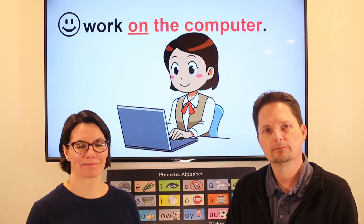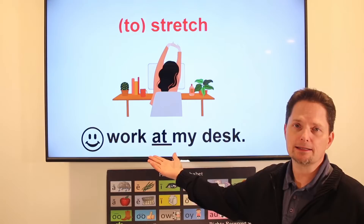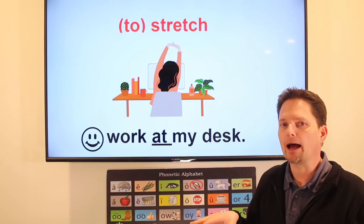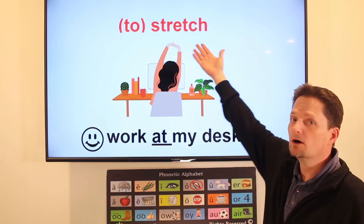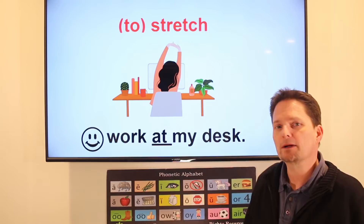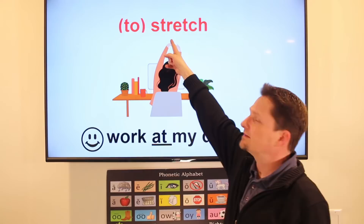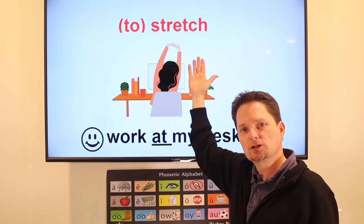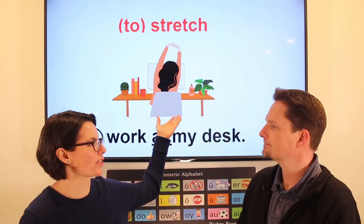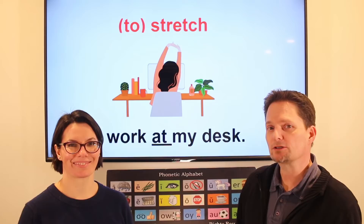I work on the computer and I work at my desk. Remember: desk, table, and counter — we say 'at.' Sit at the table, pay at the counter, I work at my desk all day — so I need to stretch. Pronunciation of 'stretch': TR makes a 'ch' sound like chicken — 's-ch,' 'str,' 'stretch.' Do you need to stretch sometimes? Yes, I need to stretch sometimes. Why? Because I work at my desk all day.